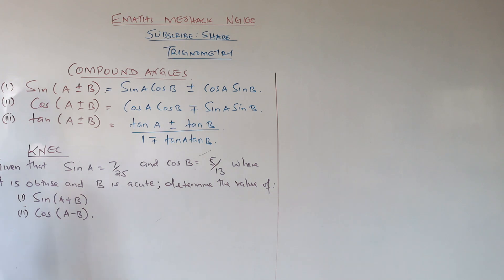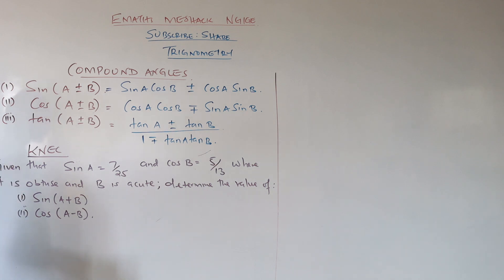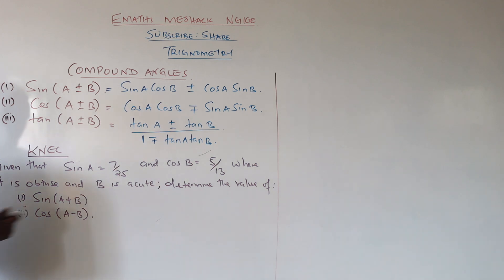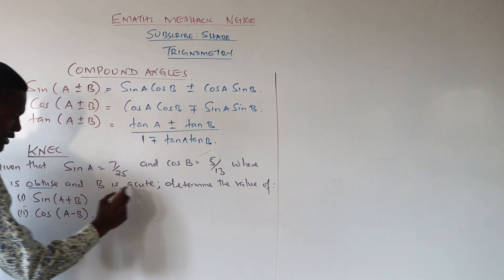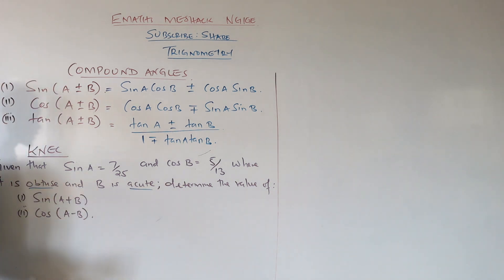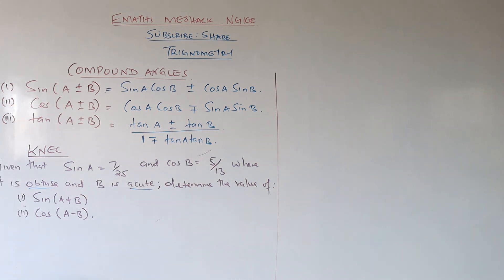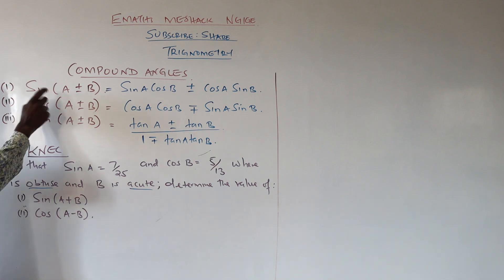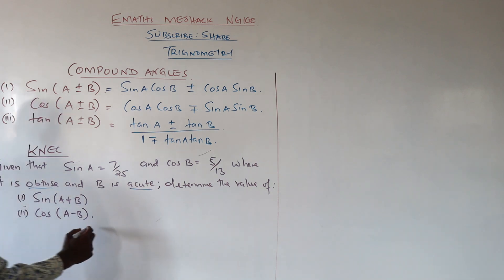We have another example from NEC 2018. Sine of a equals 7 over 25, cosine of b is 5 over 13, where a is obtuse and b is an acute angle. Determine the value of sine of a plus b, and cosine of a minus b. We know the compound angle relationships to apply.